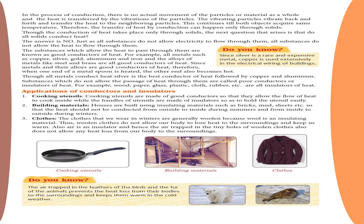This continues until both objects acquire the same temperature. Therefore, heat transfer by conduction happens only through solids. Materials that allow heat to be conducted through them easily are called conductors of heat. Metals such as iron, copper, silver, and aluminium are good conductors. Materials that do not allow heat to be conducted easily are bad conductors, also known as insulators — for example, wood, plastic, and glass.